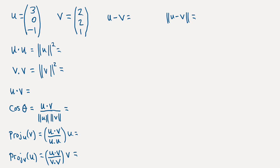So first of all let's calculate the dot product of u with itself, which is going to be the length of u squared or the norm of u squared. So that's going to be 3 squared and 0 squared and minus 1 squared. So we have 9 and 0 and 1 comes to 10.